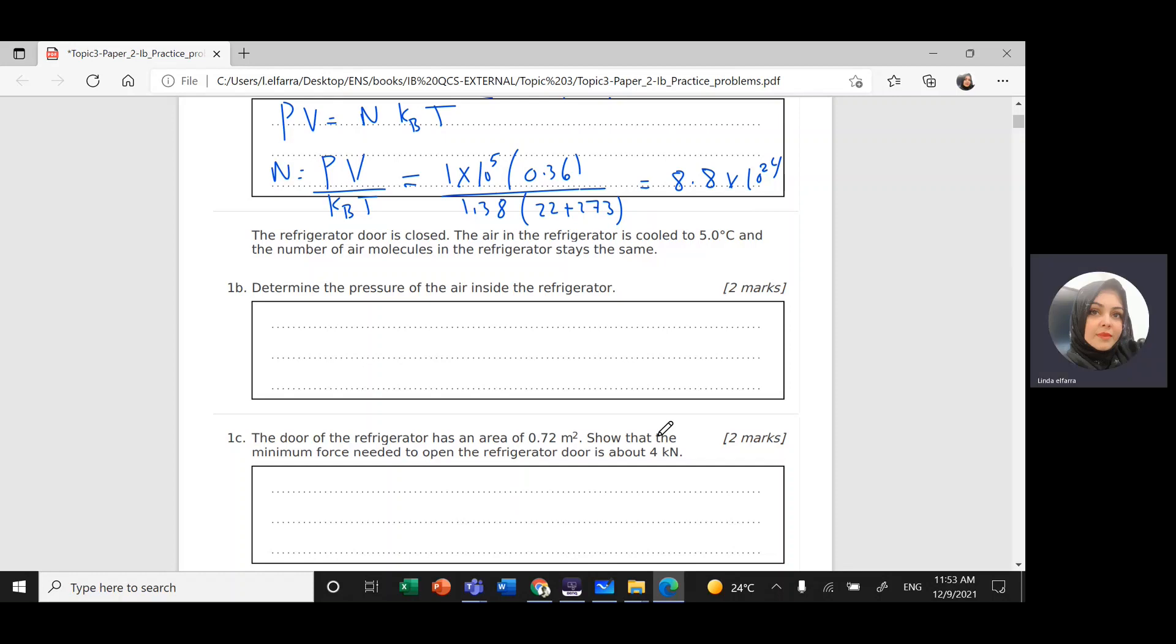Part B: Determine the pressure of the air inside the refrigerator. I can use Gay-Lussac's equation because volume is constant. If volume is constant, we can use P2 equals P1 times T2 divided by T1.